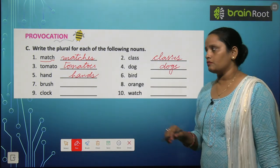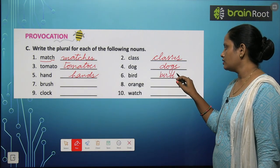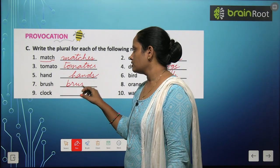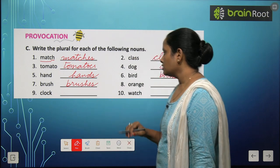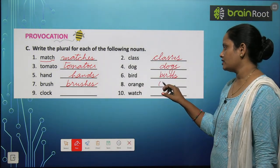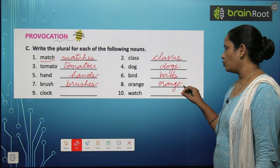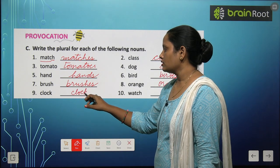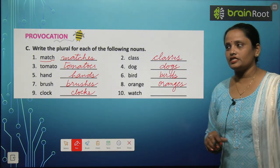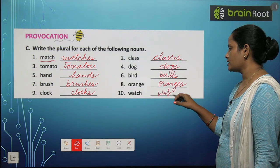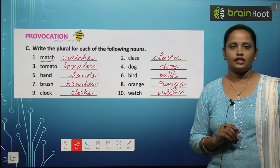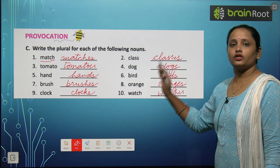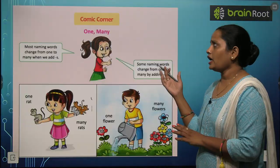Bird becomes birds. Brush becomes brushes. Orange becomes oranges — only ES. Clock ka ban jayega clocks. And watch ka ban jayega watches — ES lagayenge. Clear, children? So like this you have to convert these words into their plurals.